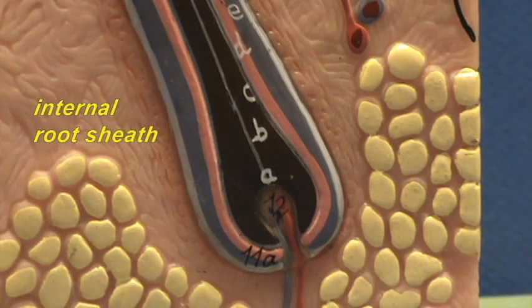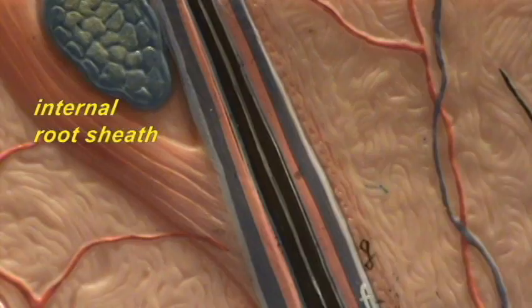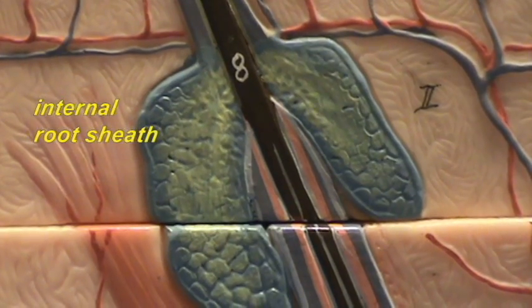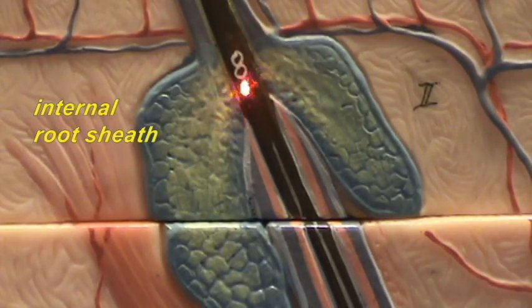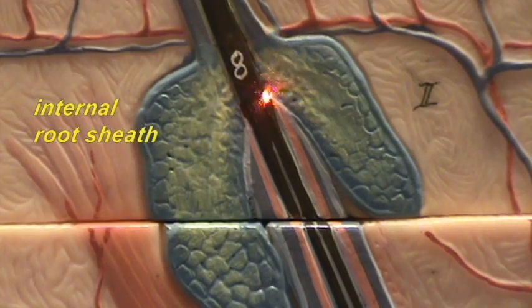If we follow the follicle upward, you can see where the internal root sheath basically disintegrates right over here, right near where this 8 is. This is going to create a space around the hair shaft.